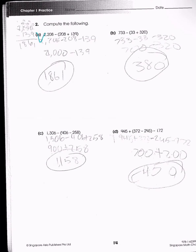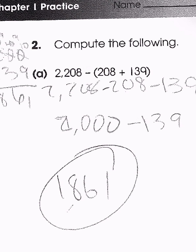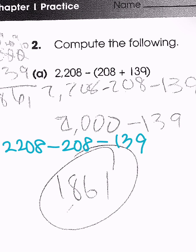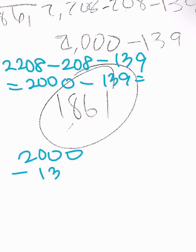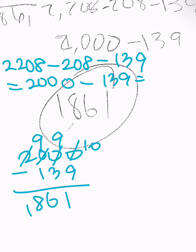Now we'll solve examples A and C together; solve the others on your own. For A, we distribute the negative sign to get 2,208 minus 208 minus 139. Doing the first two gives 2,000 minus 139, which equals 1,861.